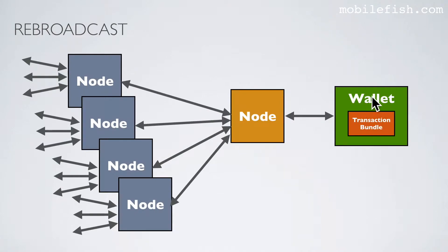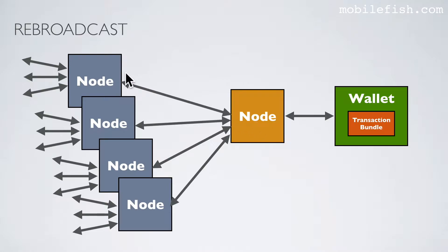This is the user's wallet and this is the transaction. This is the node the wallet is connected to, and these are the node neighbors. The user will submit a transaction to its connected node and the node will broadcast these transactions to its neighbors. If you are sure this node went offline after the transaction is received or the node is severely overloaded, the user can rebroadcast this transaction again.